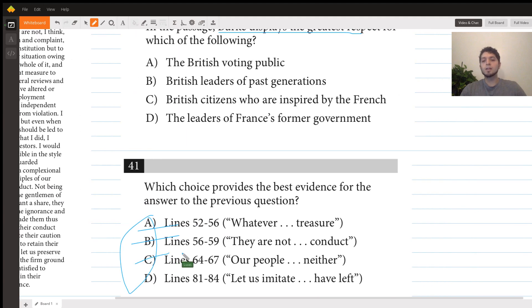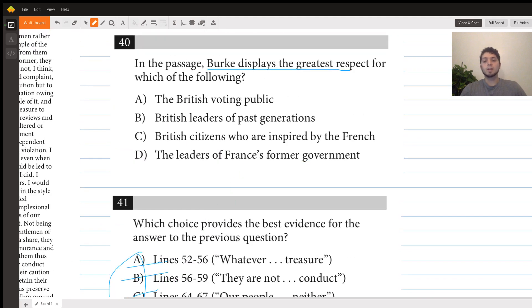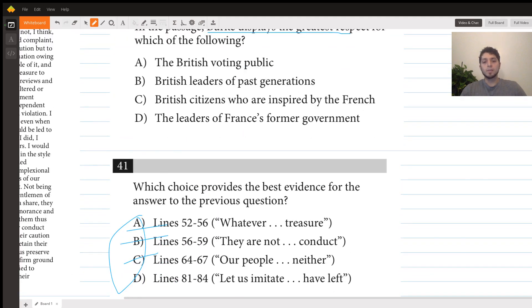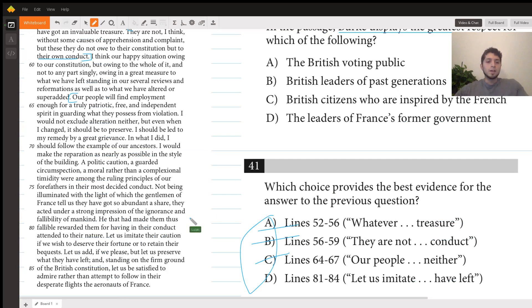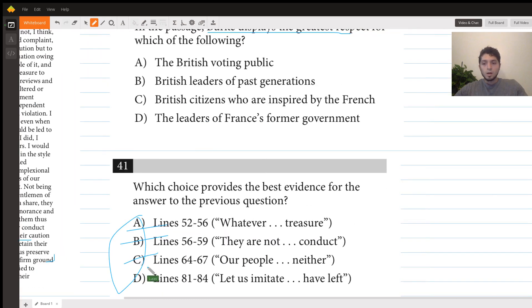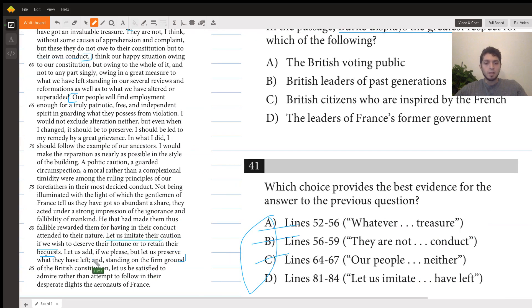Again, there's really nothing about Burke respecting anyone here in this passage, so let's go to 81-84. It says 'Let us imitate their caution if we wish to deserve their fortune or to retain their requests. Let us add if we please, let us preserve what they have left standing on firm ground.' It ends here: 'Let us preserve what they have left.'